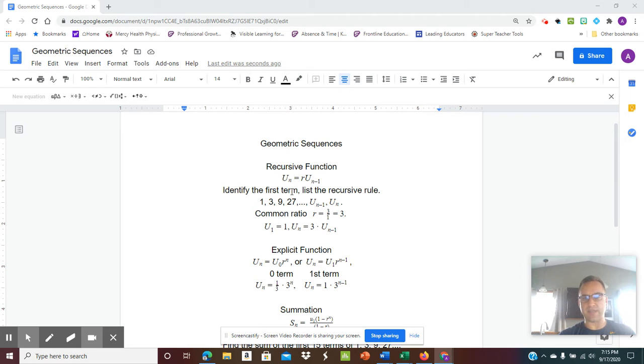So all that you need to do is identify the first term, then list the recursive rule. So in the following sequence, 1, 3, 9, 27,